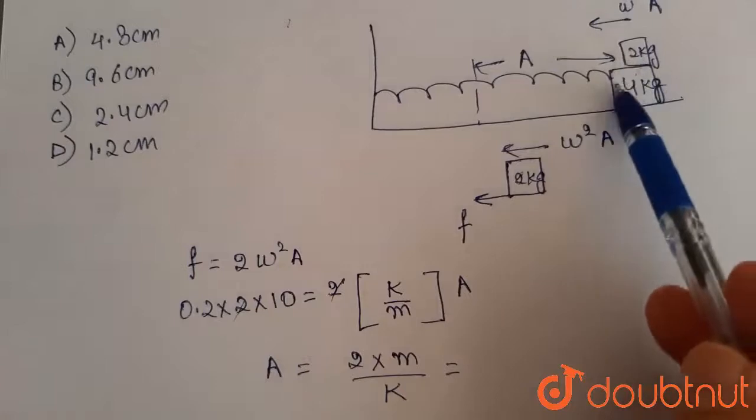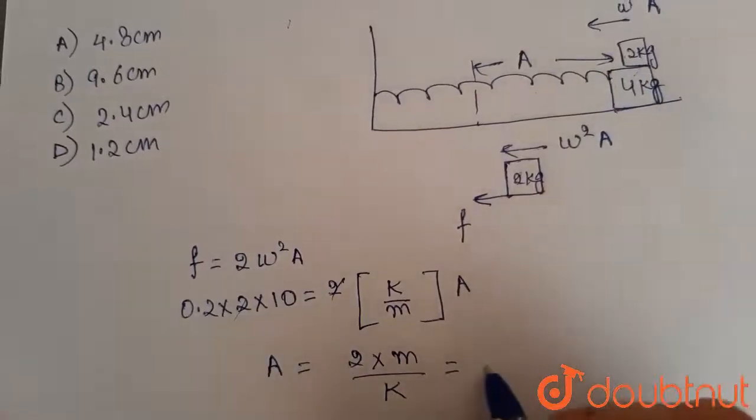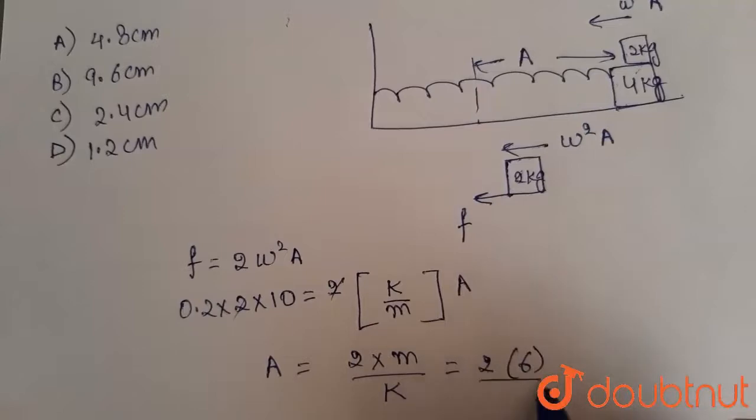since the mass of the complete system is 2 plus 4, which is 6 kgs. So this turns out to be 2 times of 6 divided by 500.